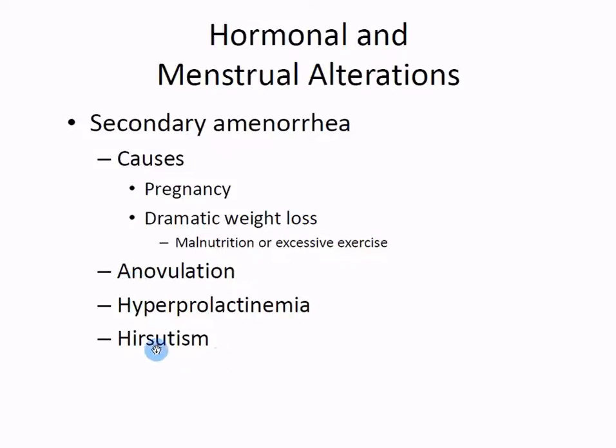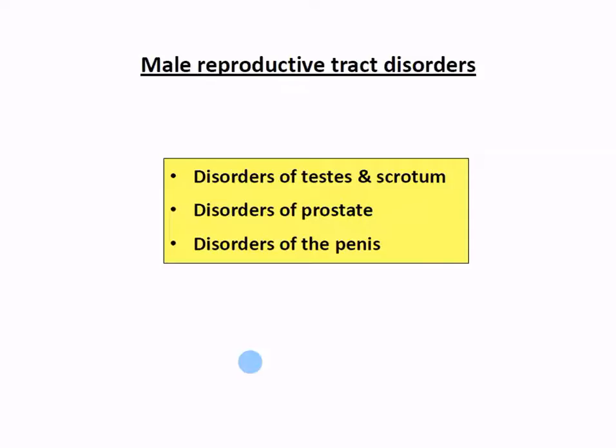Hirsutism involves too many masculinizing hormones - too many androgens in the body. DHEA is usually the one to point to, though testosterone can also cause it. Female bodybuilders who take artificial testosterone would start looking more masculine - increased muscle size, bone density, and facial hair growth - while simultaneously stopping menstruation.